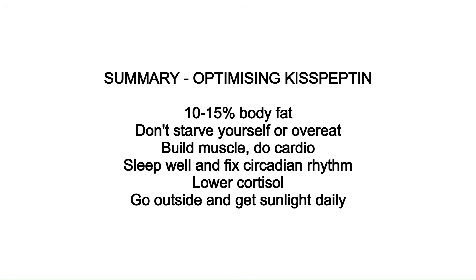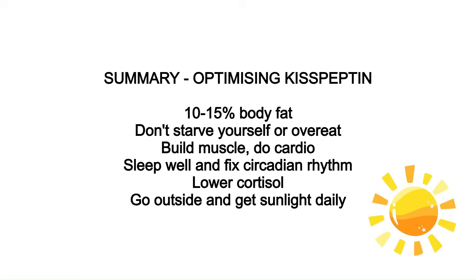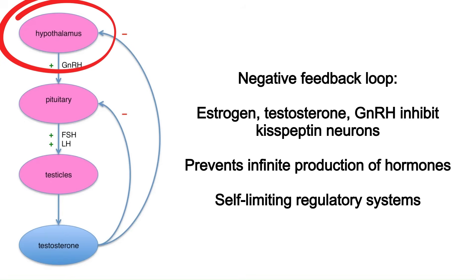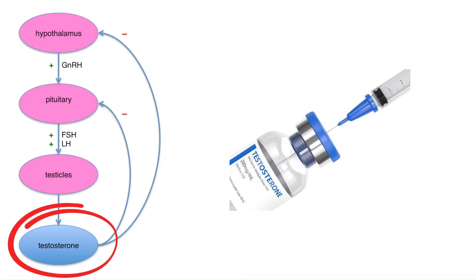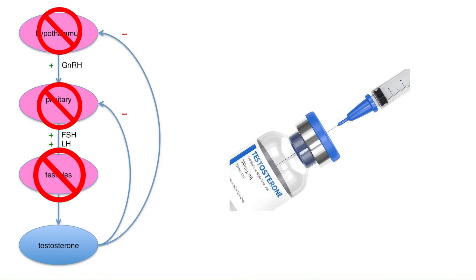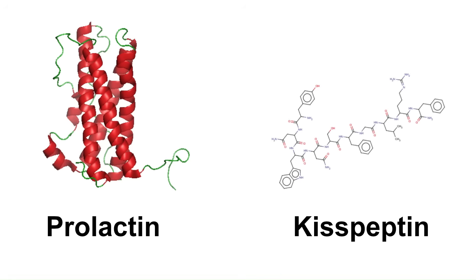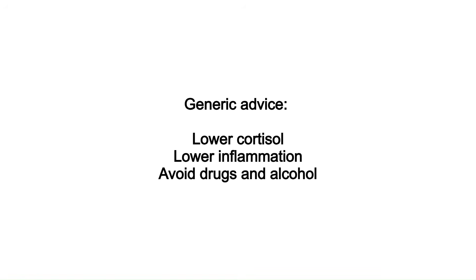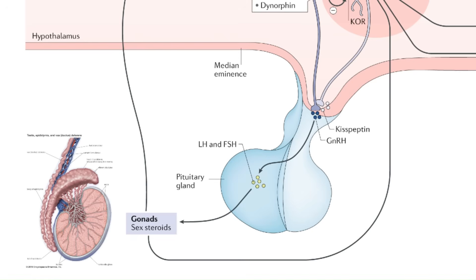To summarize for kisspeptin: get to 10 to 15% body fat, don't starve yourself or get obese, build muscle, do cardio, sleep well, fix your circadian rhythm, lower your cortisol, and spend time outside every day especially at sunrise, midday, and sunset. There's also a negative feedback loop where estrogen, testosterone, and GnRH all inhibit kisspeptin neurons to prevent runaway hormone production. Taking steroids shuts down natural testosterone by inhibiting the HPG axis including kisspeptin. Prolactin also inhibits kisspeptin, so you want to keep it fairly low.